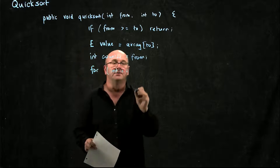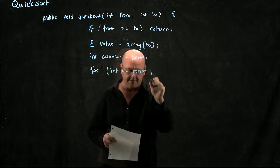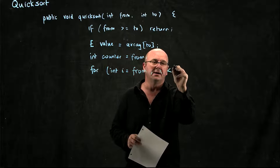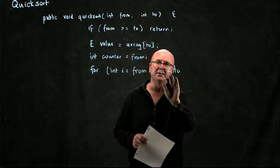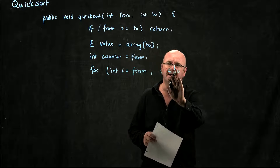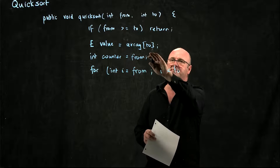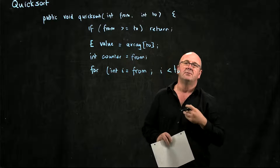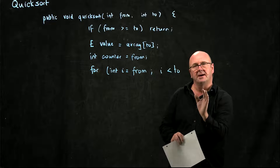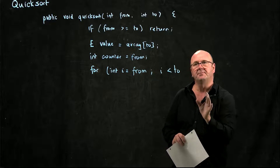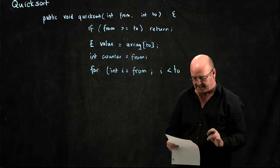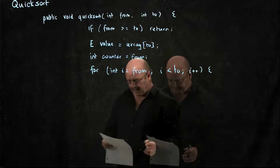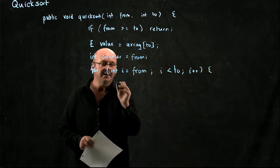We're going to go from `from`, and we're going to go up to `to`, but we're not going to compare the value at the pivot point. We're going to go up to the element before the pivot point, but we're not going to look at the pivot point. Increment `i`.